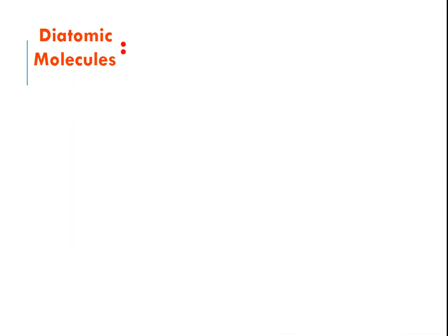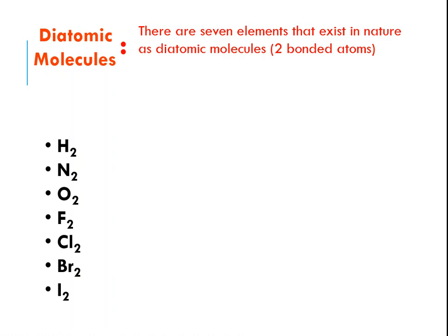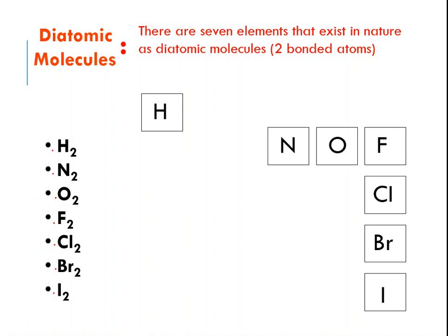There are seven different elements that occur in nature as diatomic molecules. Diatomic means they don't exist as individual atoms — two atoms bond together to form the molecule. Those seven elements are hydrogen, nitrogen, oxygen, fluorine, chlorine, bromine, and iodine. Hydrogen is set off by itself in the top left of the periodic table, and the other six — nitrogen, oxygen, fluorine, chlorine, bromine, and iodine — are arranged in an upside-down L. Whenever you write the formula for one of these elements, you must write it as diatomic: H2, N2, O2, etc.